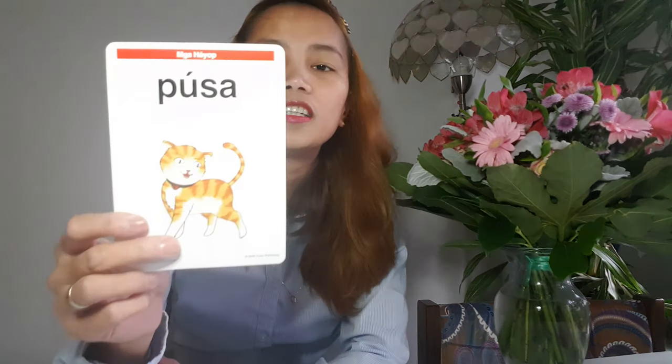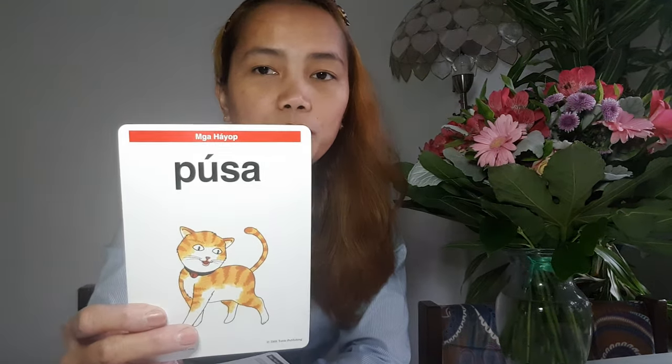Our third animal in Tagalog is pusa — that is cat in English. Let's use it in a sentence: The cat likes to play with yarn — gusto ng pusang maglaro ng sinulid. Sinulid is yarn or thread. Gusto means likes — that's why when we say gusto kita, that means I like you.